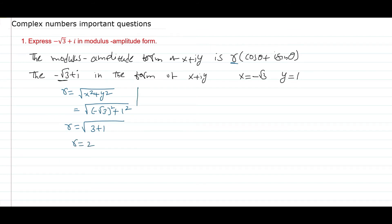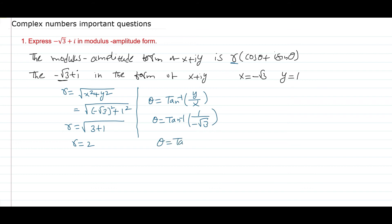The next step: theta equals tan inverse of y by x. So theta equals tan inverse of 1 by minus root 3, which gives theta equal to tan inverse of minus 1 by root 3.